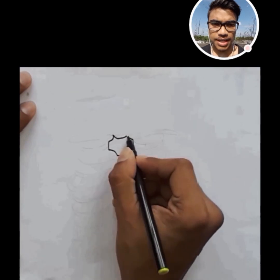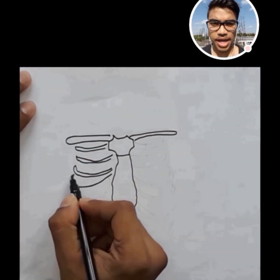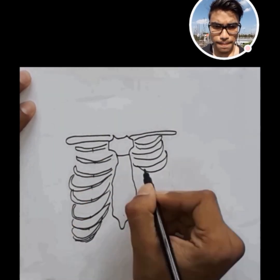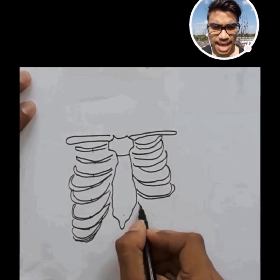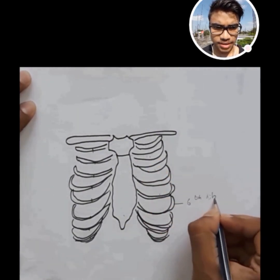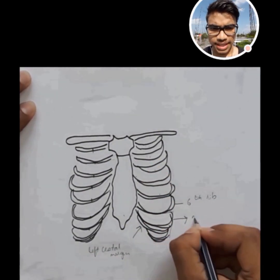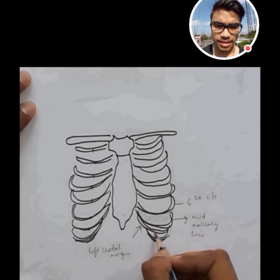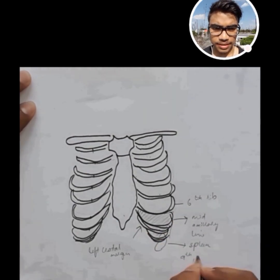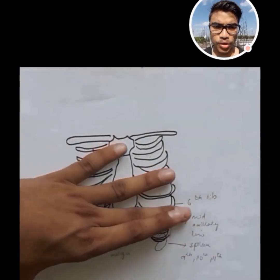Now let us see drop space in far more detail in a thoracic cage, which I have drawn here. We are going to count — this is up to the sixth rib, this is the left costal margin, and this is the mid-axillary line. The area is the drop space. And the spleen resides in the ninth, tenth, and eleventh rib.